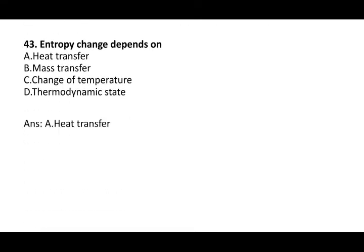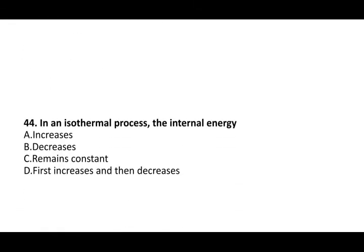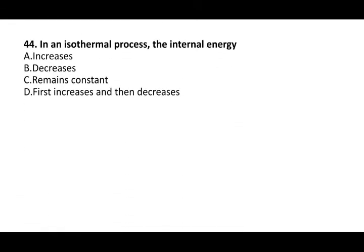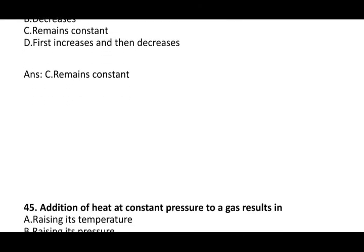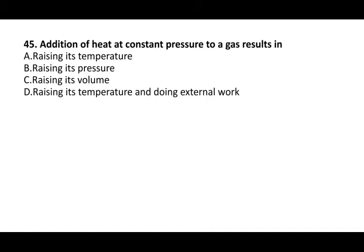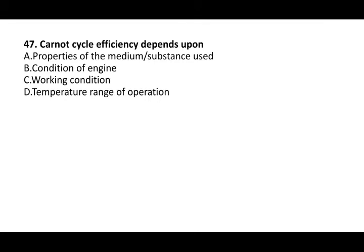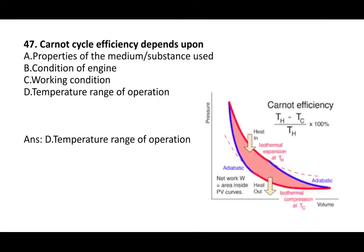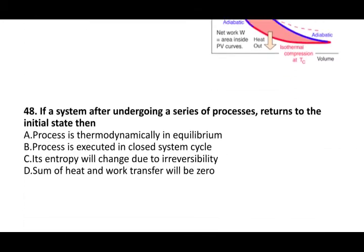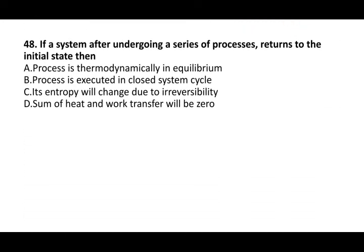Next question: entropy change depends on heat transfer. Next question: in an isothermal process, the internal energy remains constant. Next question: addition of heat at constant pressure to a gas results in rising its temperature and doing external work. Next question: the Carnot cycle has maximum efficiency for a reversible engine. Carnot cycle efficiency depends on the temperature range of the operation. If a system undergoing a series of processes returns to the initial state, the sum of heat and work transfer will be zero.